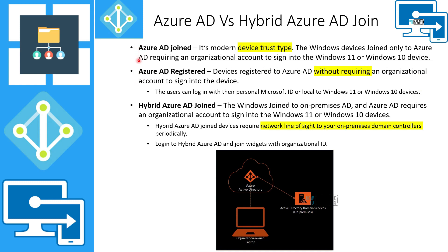Azure AD joined is for company-owned devices. Hybrid Azure AD join means devices are joined to on-premises Active Directory — or AD services in the cloud — but are also registered with Azure Active Directory. In a BYOD scenario, Azure AD registered devices appear only in the Azure AD portal. For hybrid Azure AD join, device records exist in both on-prem Active Directory and Azure AD. This is a very complex scenario requiring network line of sight and complex infrastructure management, which is not recommended.